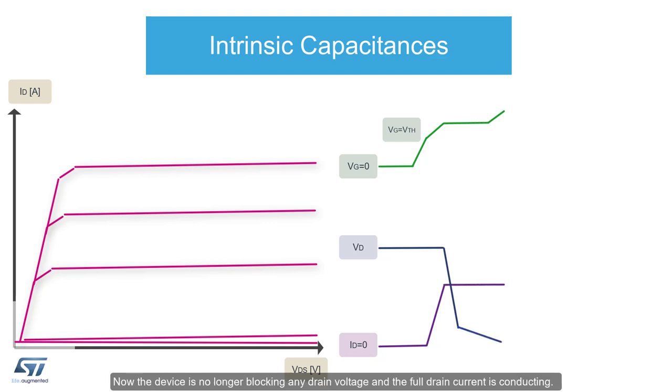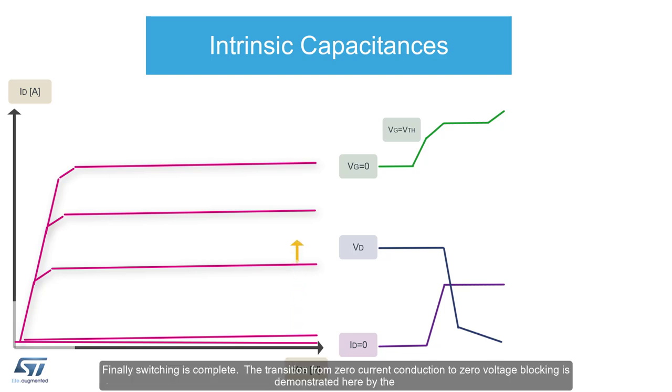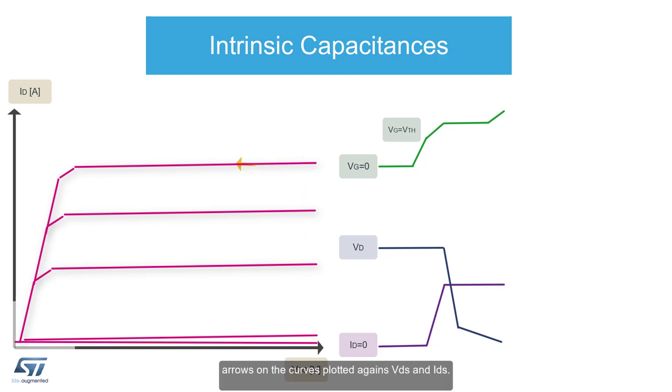Now the device is no longer blocking any drain voltage and the full drain current is conducting. The Miller effect disappears and the VGS increases to the value of voltage charging the input capacitance. Finally, switching is complete. The transition from zero current conduction to zero voltage blocking is demonstrated here by the arrows on the curves plotted against VDS and IDS.